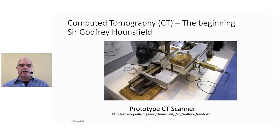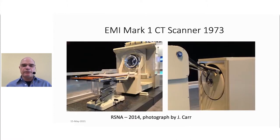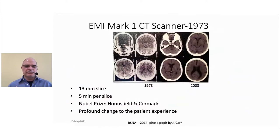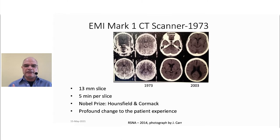In the beginning, Dr. Hounsfield invented the CT — this was his setup for building the technology that became computed tomography. This is the very first clinical CT scanner, the EMI Mark I, circa 1973. This scanner was able to generate 13-millimeter thick slices, and it took five minutes per slice to acquire an image. Dr. Hounsfield and Cormack won the Nobel Prize, and the invention of CT — the ability to look inside the living human being — has been a profound change to healthcare across the body, from head to heart to toe.